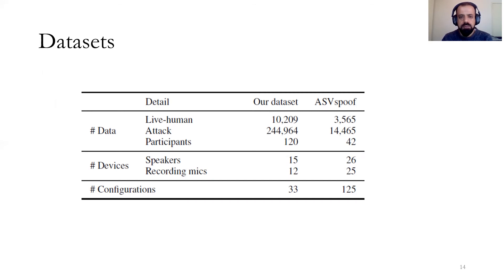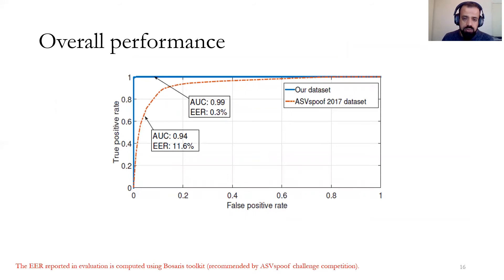Our evaluation shows that Void achieves superior performance on both datasets. On our dataset it achieves 0.3% EER, and on the ASVspoof dataset it achieves 11.6% EER. Void also achieves good performance across variances such as gender, distances between attacker and speaker, and cross-training dataset scenarios.